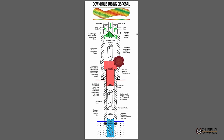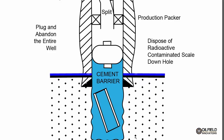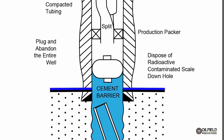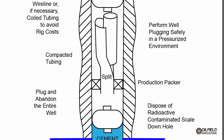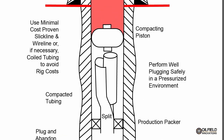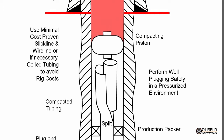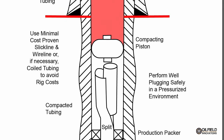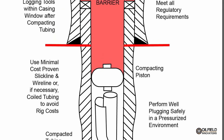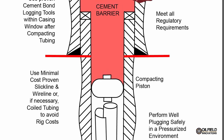Let's look a little bit closer at this example well schematic. Our method allows you to place a cement barrier and also dispose of radioactive contaminated scale attached to the tubing. Disposing of tubing downhole removes the risk of bringing it to surface where it can contaminate our environment. With 80 to 90 percent liquid space within the casing, it's relatively easy to split tubing and drive another piece of tubing within the tubing to compact it so as to provide space for abandonment plugs.